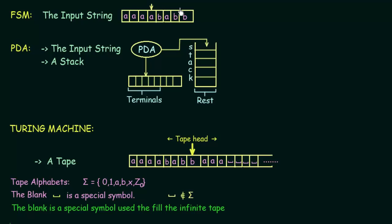We just had an input string and we had a control which can move only in one direction, and that is forward. We saw the finite state machines had a very limited power and also a very limited memory. The class of languages accepted by finite state machines are the regular languages. And coming to push down automata, the data structure that we had was the input string and apart from that we had a stack.